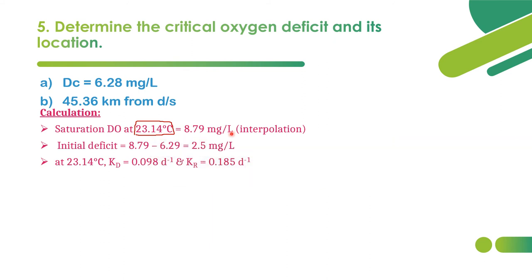Initial deficit D₀ = 8.79 − 6.29 = 2.5 mg/L. At 23.14°C (greater than 20°C), apply the temperature correction formulas to find kd and kr at the mixed temperature. The corrected values are kd = 0.098 per day and kr = 0.185 per day.